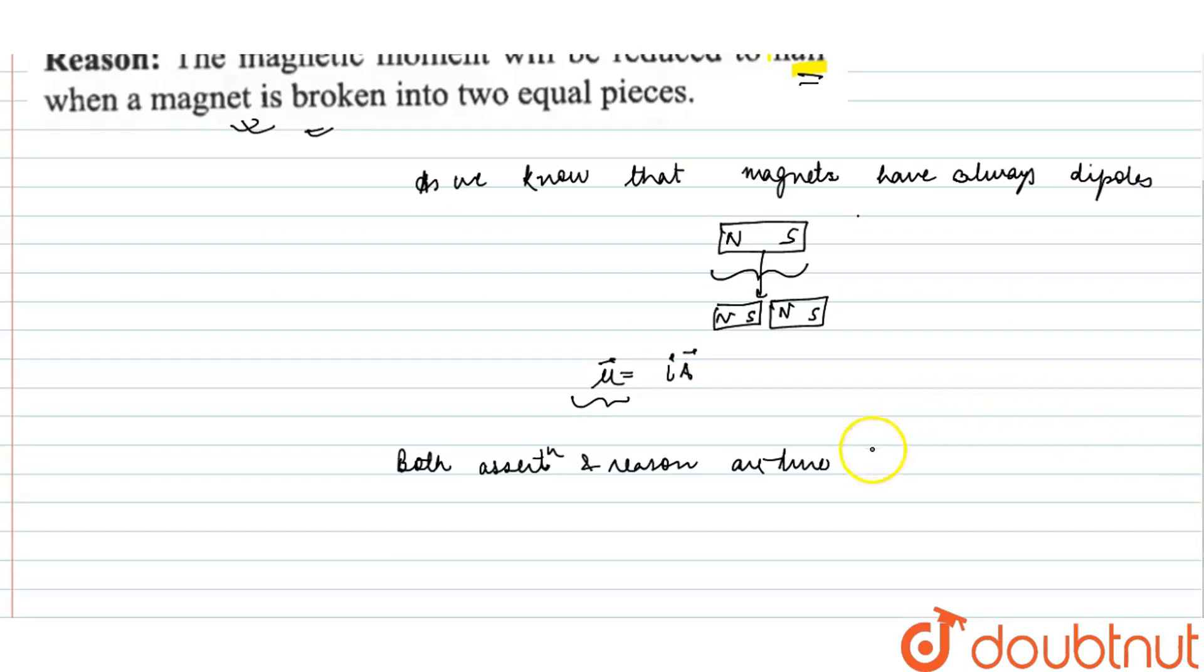That's why reason is not correct explanation for assertion.